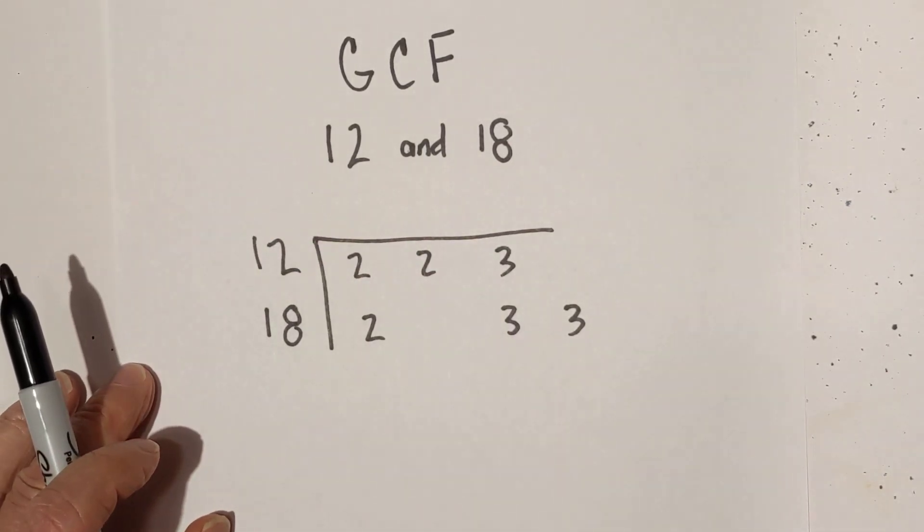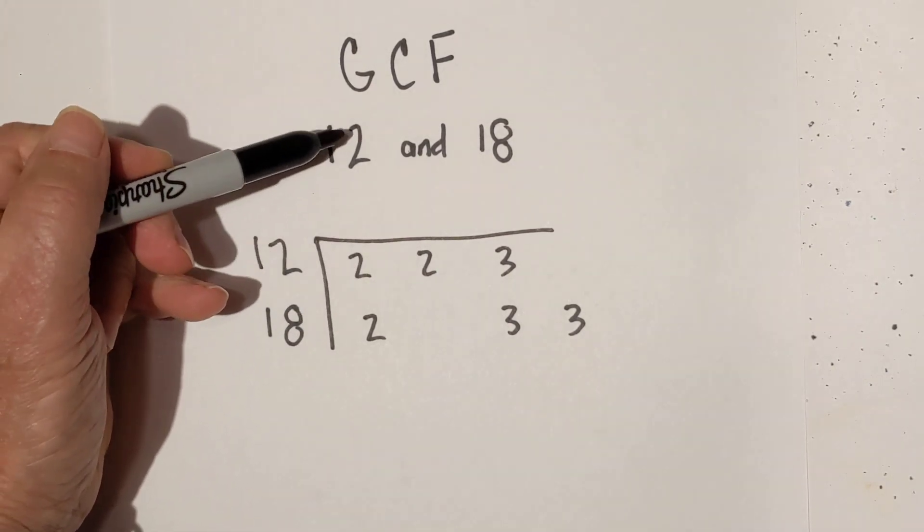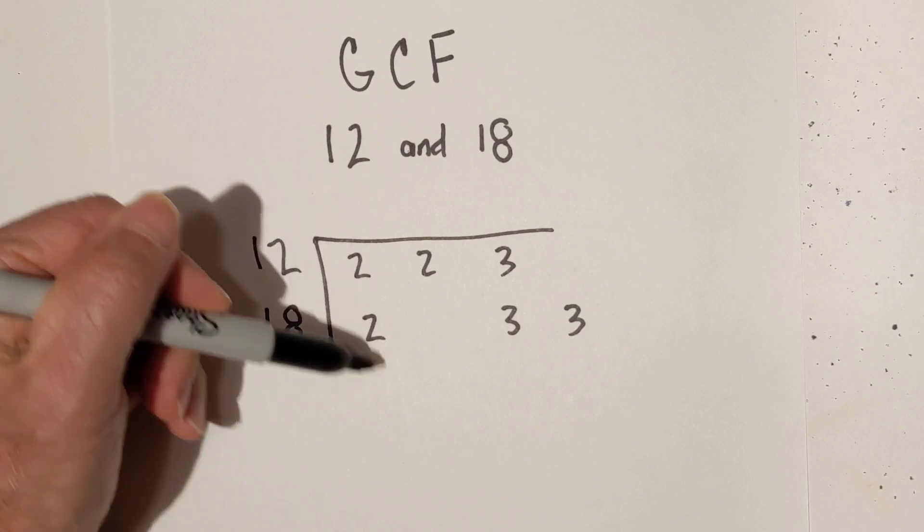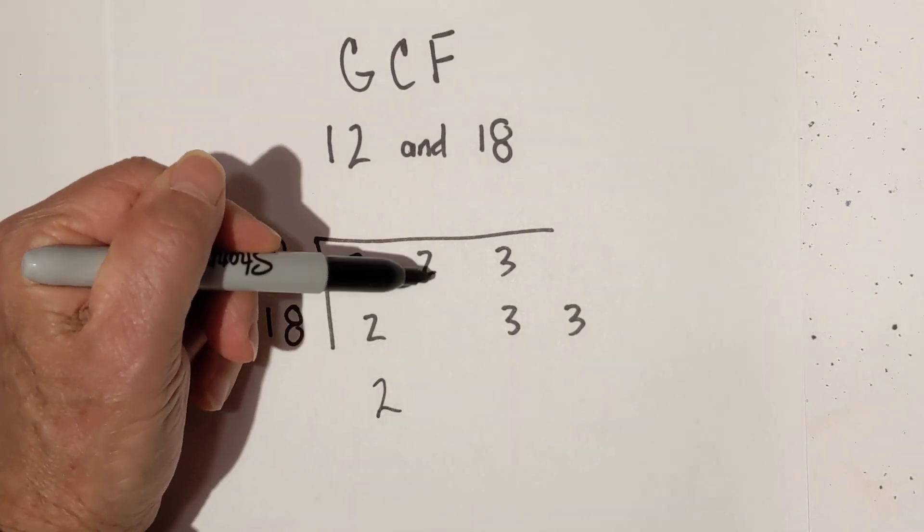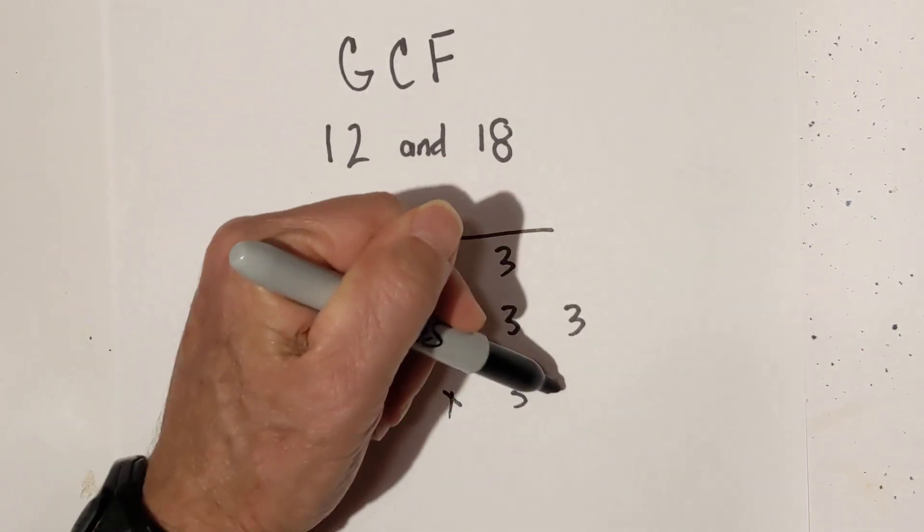So what we do for the GCF is you only multiply pairs. So you're looking for pairs because, again, we only have two numbers. So we have a pair of 2s, no pair here, a pair of 3s, no pair there. So it's just 2 times 3.